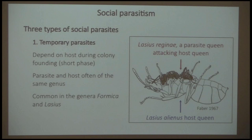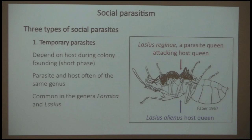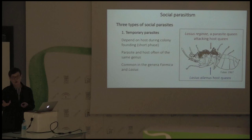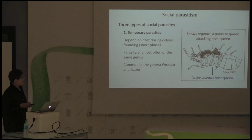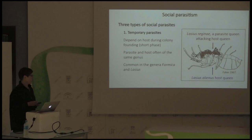There are three types of social parasites. The first group is temporary parasites. As the name suggests, they are dependent on the host only during a short period — namely when they found their colony. Once the colony is founded, the parasitic phase ends. In temporary parasitism, the parasite and host often belong to the same genus, and it's common in genera Formica and Lasius. Here a Lasius reginae parasite is shown attacking a Lasius alienus host queen, rubbing itself to acquire the host's smell and enter the nest.